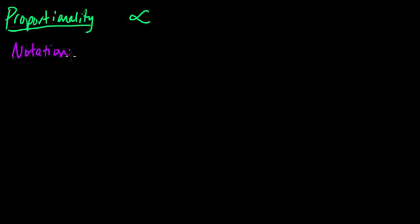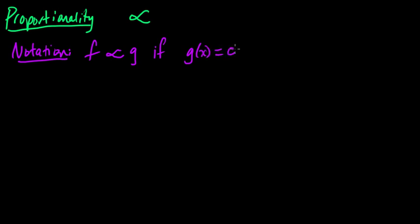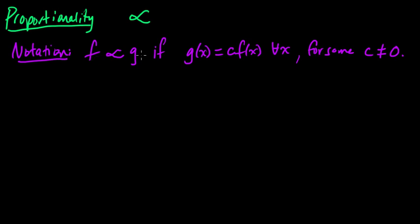So this is just notation. A function f is proportional to g if g of x equals some constant times f of x for all x, for some constant c, and c is not equal to zero. So that's all this means — we say that f is proportional to g. And since c is non-zero, you can put 1 over c on the other side, so this also implies that g is proportional to f. f proportional to g, g proportional to f — same thing.